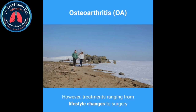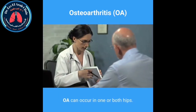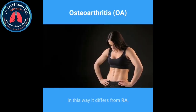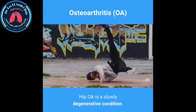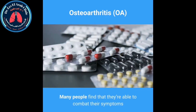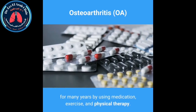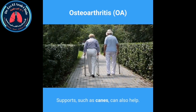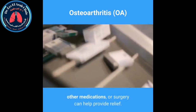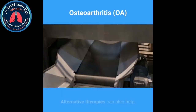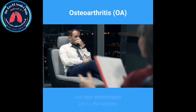Osteoarthritis in your hips. OA can occur in one or both hips, which differs from RA, which usually occurs in both hips simultaneously. Hip OA is a slowly degenerative condition. Many people can manage their symptoms for many years using medication, exercise, and physical therapy. Supports such as canes can also help. If the condition worsens, steroid injections, other medications, or surgery can help provide relief. Alternative therapies and new technologies are also available treatment options for hip OA.